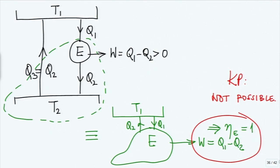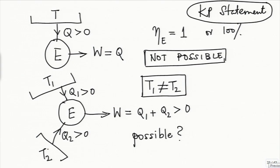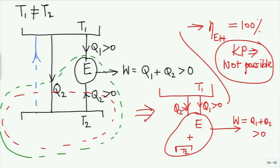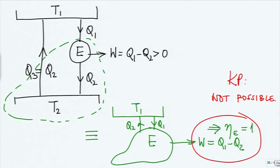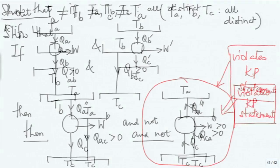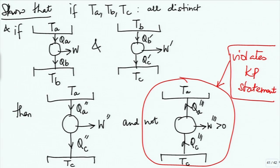I think I forgot to mention: when we said such a thing is possible — absorbing from one reservoir and rejecting to another — such an engine is known as a 2T heat engine. That is the standard textbook definition we will be using. A 2T heat engine is something which absorbs heat from one reservoir, rejects it to another reservoir at a distinctly different temperature, and produces a positive amount of work.